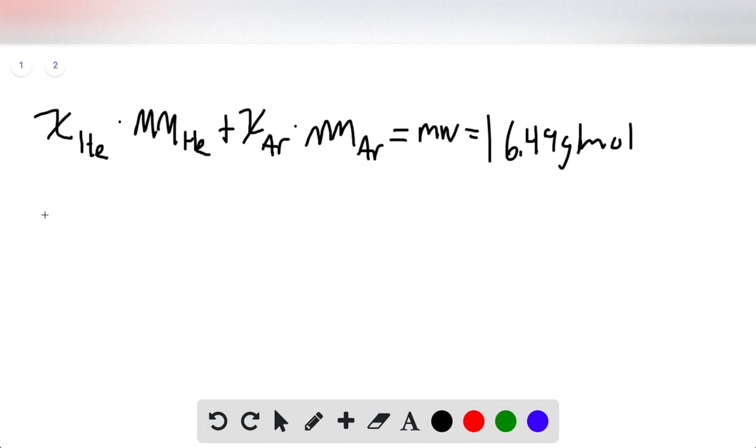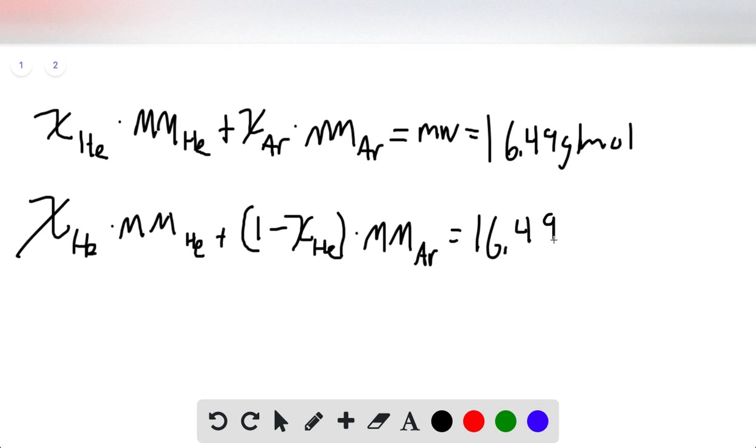Now we can do some algebra to find the mole fraction of helium. We have mole fraction of helium times the molar mass of helium. Since we only have two gases, the mole fraction of argon equals 1 minus the mole fraction of helium, times the molar mass of argon, and that equals 16.49 grams per mole.